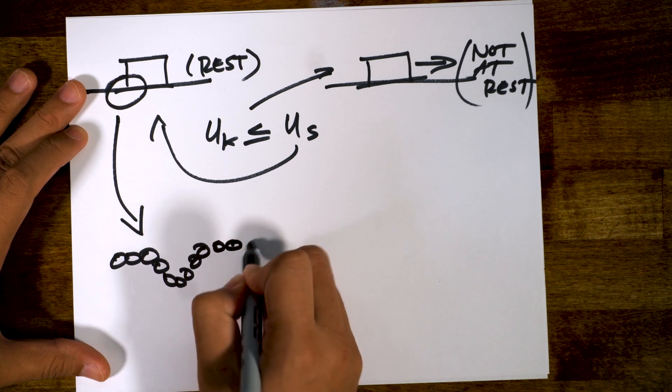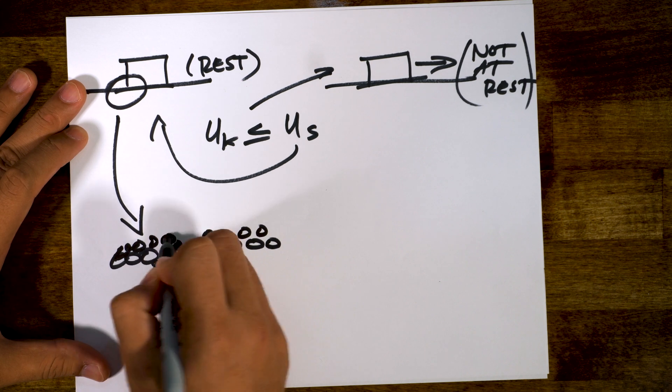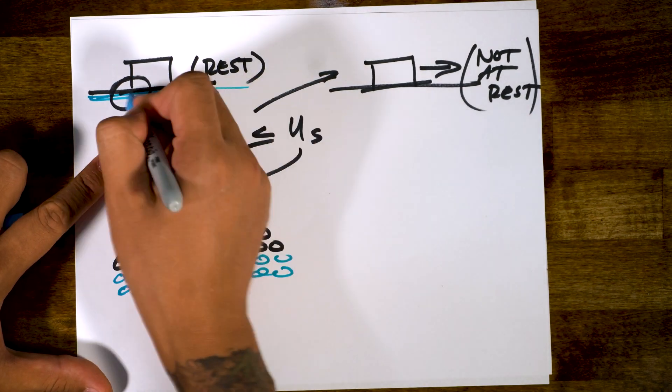Now these are the atoms of the block. There are many. Now this is the surface of the table. This guy. Surface of the table.